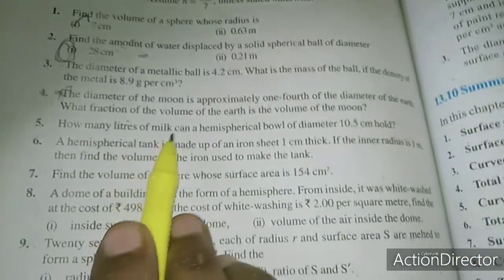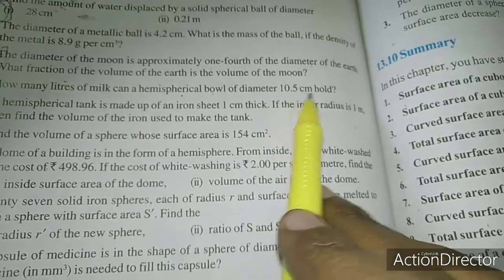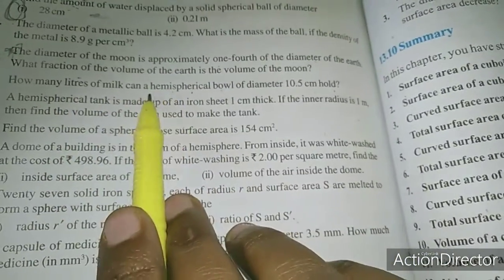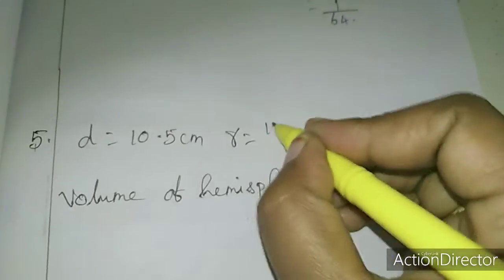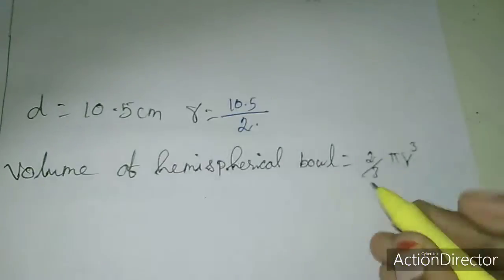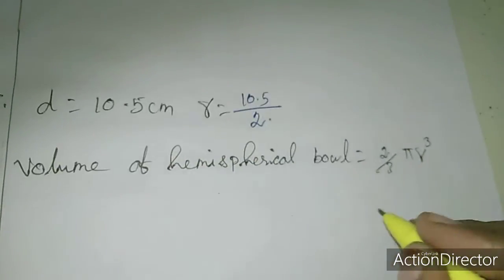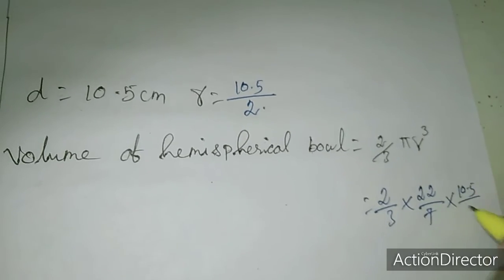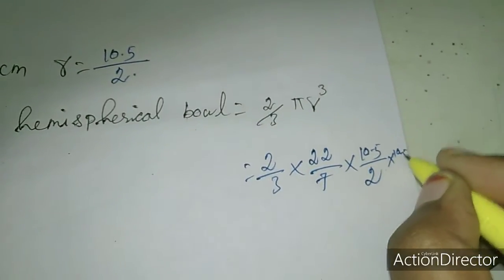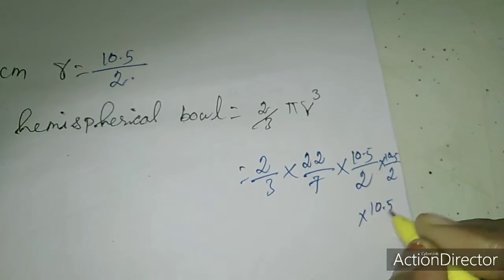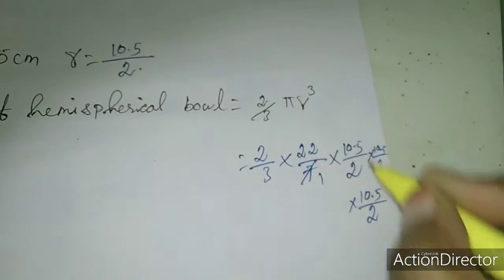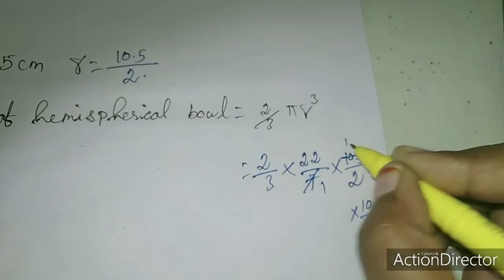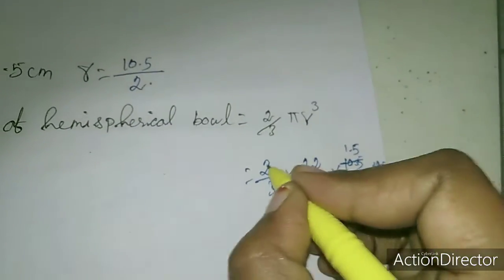Now we will move to the fifth sum: how many liters of milk can a hemispherical bowl of diameter 10.5 centimeter hold? They are asking for the volume of the hemisphere. Diameter is 10.5, so r = 10.5 ÷ 2. Volume of hemisphere = 2/3 × 22/7 × (10.5/2)³. Cancelling: 1×7=7, 1×7=7, giving 0.5 and then factors of 3 and 2 cancel, leaving 11 in the numerator.